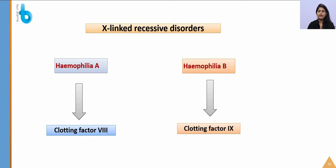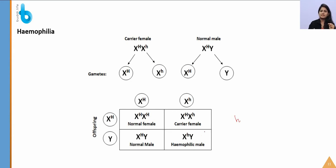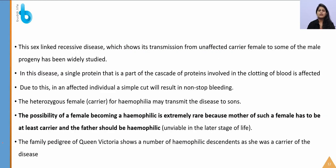In the hemophilia cross, the small 'h' indicates the defective hemophilic gene and capital 'H' is the normal gene. The cross is similar to color blindness. A female becomes hemophilic only when her mother is a carrier and her father is already hemophilic. The possibility of a female being hemophilic is extremely rare.